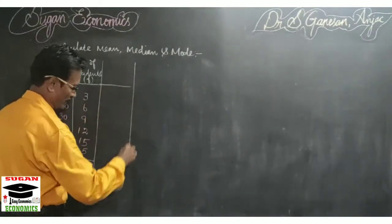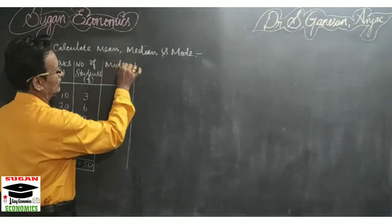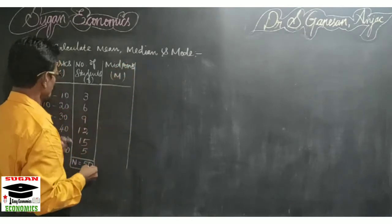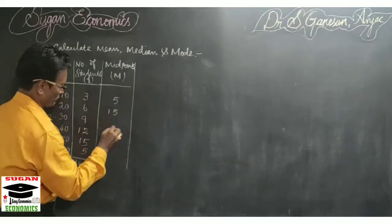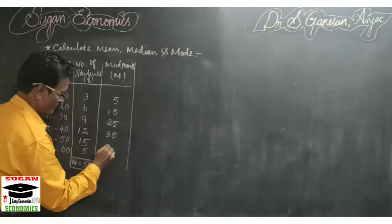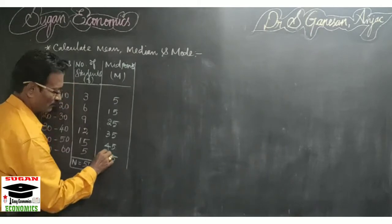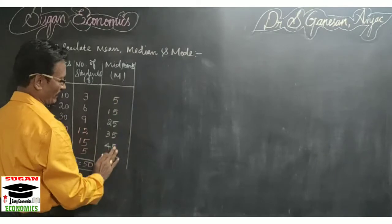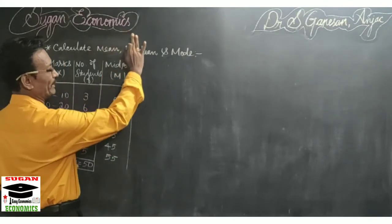First, in the table we have to calculate the midpoints, denoted by m. The first midpoint is 5, then 15, 25, 35, 45, and 55. After that, I am preparing a table for the calculation of mean, then median and mode.